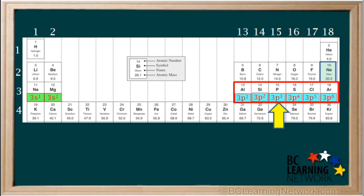The element in group 15, the third element in this group, will end in 3p3. The one in group 16, the fourth element, will end in 3p4. The element in group 17, the fifth element, will end in 3p5. And finally, the element in group 18, the sixth element, argon, will end in 3p6.